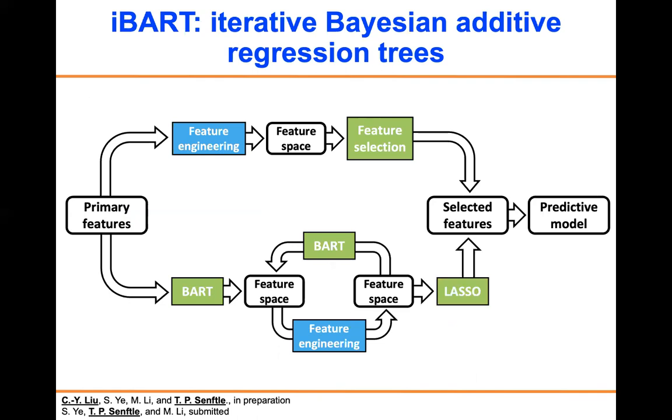So once the derived features are linearly correlated with the response, we switch to lasso to do the final feature selection. This approach uses feature selection and feature engineering iteratively, so we call it iBART.